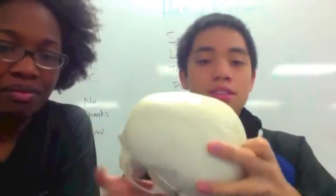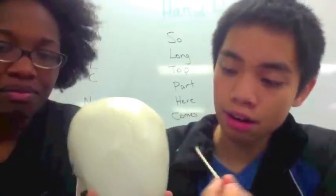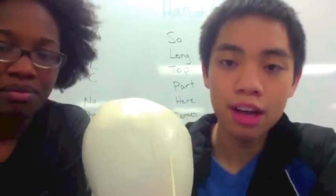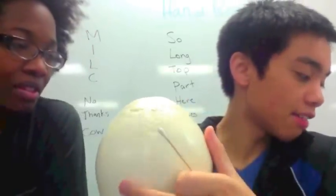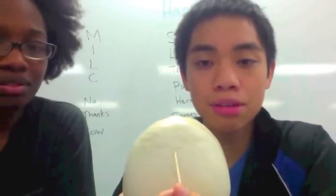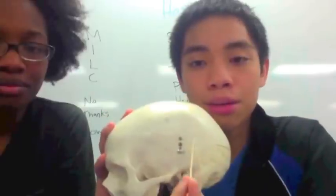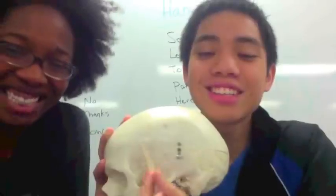We have the parietal bone, which is this one right here. You have the coronal suture again right here, and you have the sagittal suture which goes down right here. You have the lambdoidal suture in the back, and then on the side you have the squamosal suture.